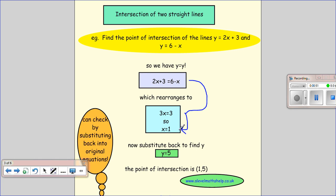We want both coordinates, not just one, so we put x=1 back into one of these equations. It doesn't matter which one; I'm going to put it in there: y=6-1, so I get y=5. So the point of intersection is at (1,5).